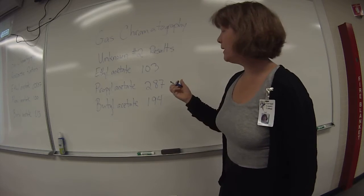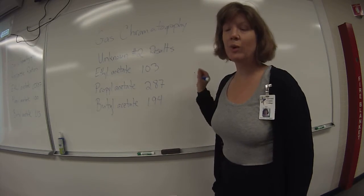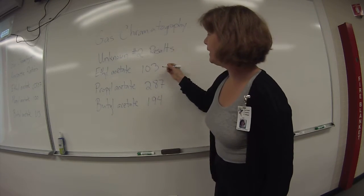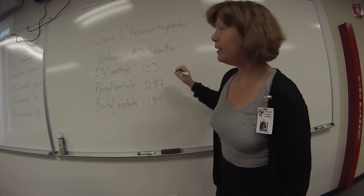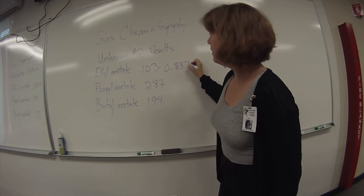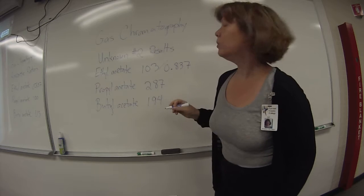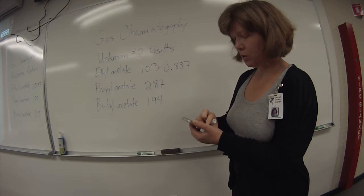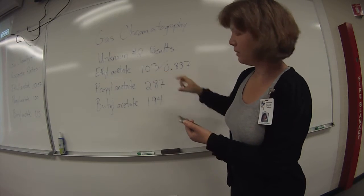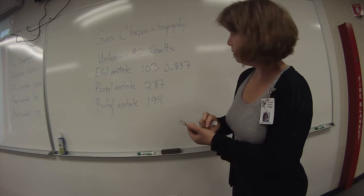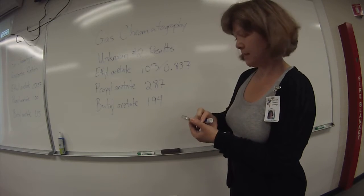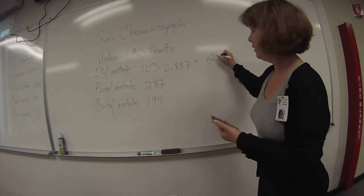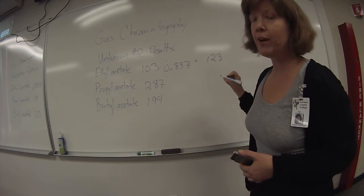What that would mean is that each number we divide by its relevant response ratio. So the area for ethyl acetate divided by the response ratio for ethyl acetate. The number that we calculated before was 0.837 for the response ratio for ethyl acetate. So the corrected area is 103 divided by 0.837, so the corrected area is 123 for ethyl acetate.